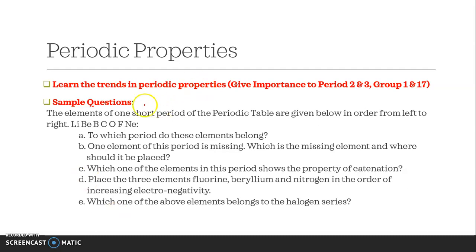From the first chapter, the periodic table, you have to learn the trends in the periodic properties. All the periodic properties which you have studied, learn the trends along the period and down the group. Give special attention to Period 2 and 3, and Group 1 and 17, because most of the time questions come from here.